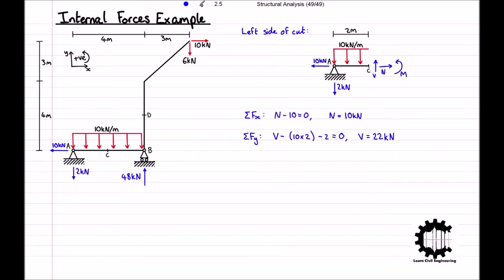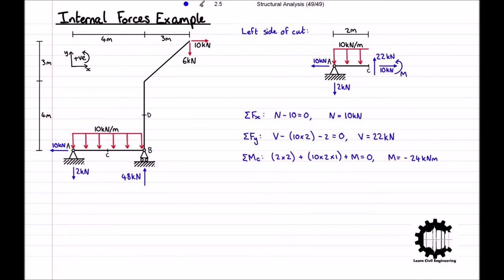Finally, taking the anti-clockwise rotation direction to be positive, the sum of all moments relative to point C is equal to 2 times 2 plus 10 times 2 times 1 plus M, which equals 0. So M is equal to minus 24 kNm. We can conclude that at point C, there is a positive axial force of 10 kN, a positive shear force of 22 kN, and a negative moment of 24 kNm.